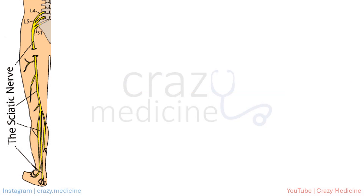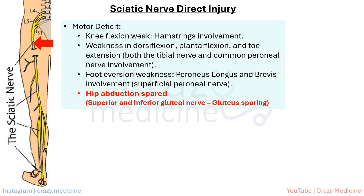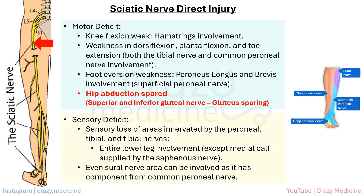Next, we consider a lesion at the sciatic nerve, continuing our approach from top to bottom. Motor deficit includes weakness in knee flexion due to hamstring involvement, weakness in dorsiflexion, plantar flexion, and toe extension from involvement of both tibial and peroneal nerves, and foot eversion weakness due to involvement of peroneus longus and brevis. A key point to differentiate this from root lesion is sparing of hip abduction — the gluteal muscles are spared, as the superior and inferior gluteal nerves are not involved. The sensory deficit involves areas innervated by peroneal, tibial, and sural nerves.